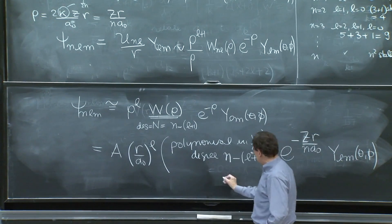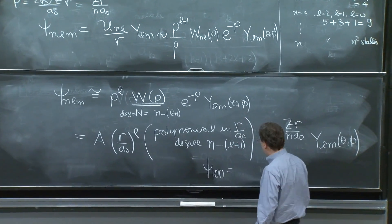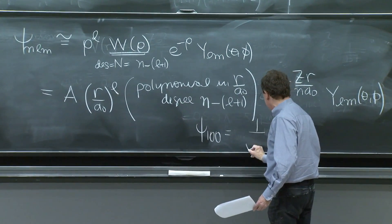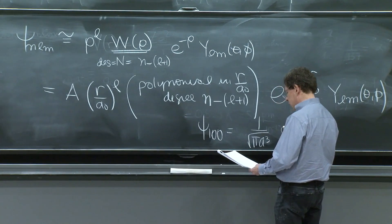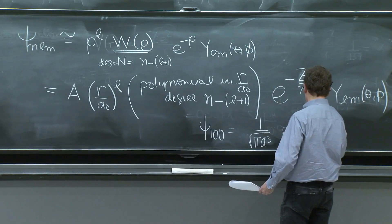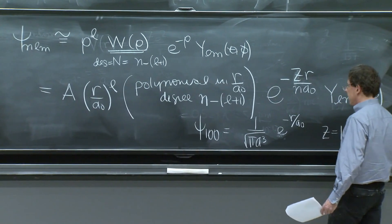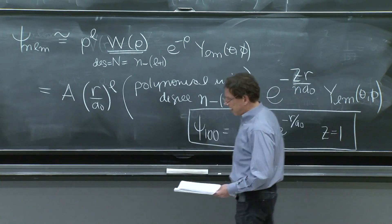We should write the simplest one, psi 1, 0, 0, n equal 1, l equal 0, m equal 0, spherically symmetric. Here it is, 1 over pi a cubed, e to the minus r over a0. For the case z is equal to 1, ground state of hydrogen.